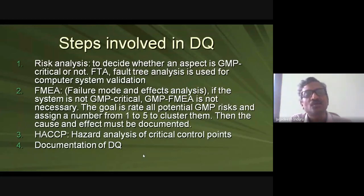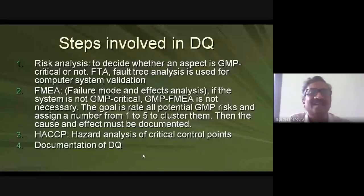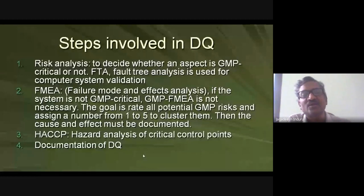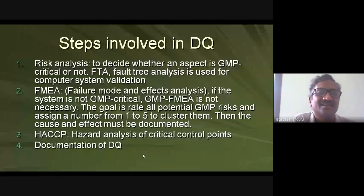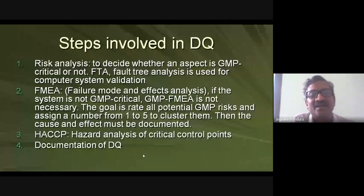The second step is FMEA — Failure Mode and Effect Analysis. If systems are not GMP critical, FMEA is not necessary for them. For faults that are identified as critical in the risk analysis, only those are subjected to FMEA, to reduce unnecessary work. For example, the casing of a mobile phone is not critical to you, but the touch screen performance is — similarly, you focus FMEA on critical equipment parts.